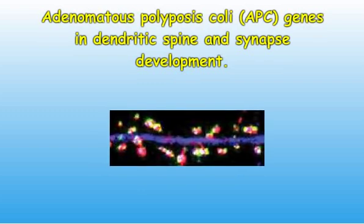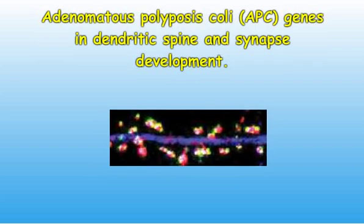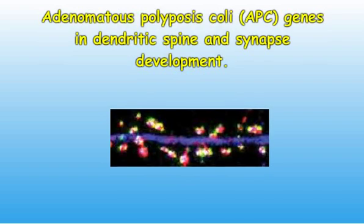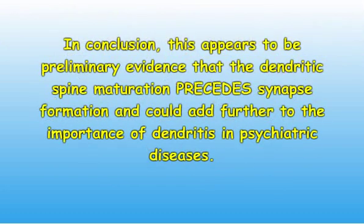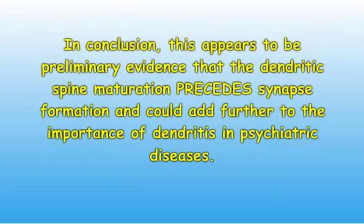Professor Armstrong suggested that APC plays a critical role in synapse formation by promoting spine maturation and, in turn, regulating synaptic function. In conclusion, this appears to be preliminary evidence that dendritic spine maturation precedes synapse formation, and could add further to the importance of inflammation of dendritic spines, or dendritis, in psychiatric diseases.